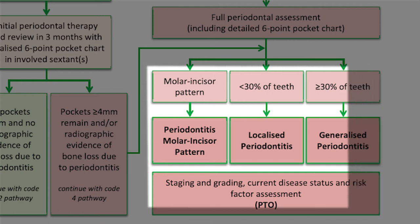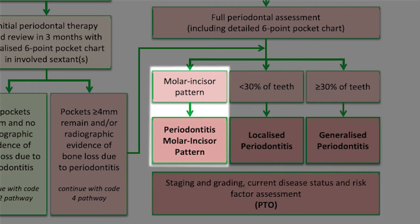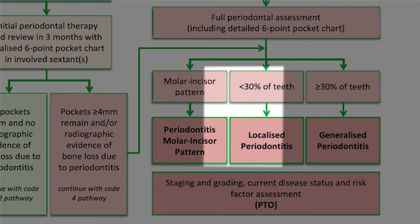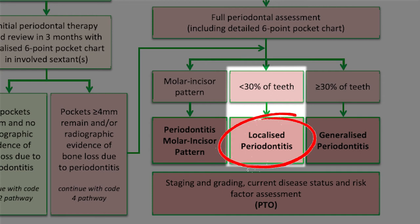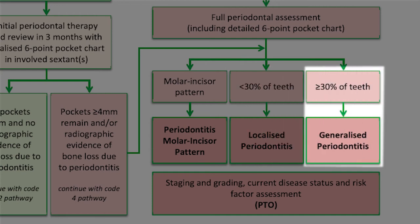In this pathway, if you notice a pattern on just the molars and incisors, this is diagnosed as periodontitis molar-incisor pattern, followed by staging, grading, stability, and risk factors — which we'll talk about in a bit. If fewer than 30% of teeth have radiographic evidence of bone loss, this is diagnosed as localized periodontitis; more than 30% would be generalized periodontitis.